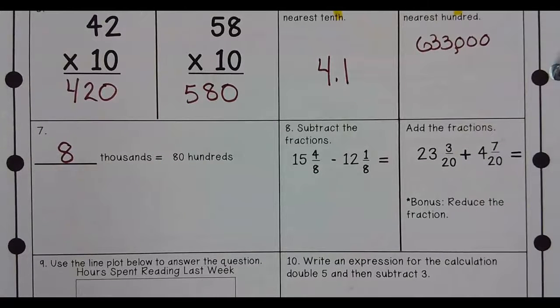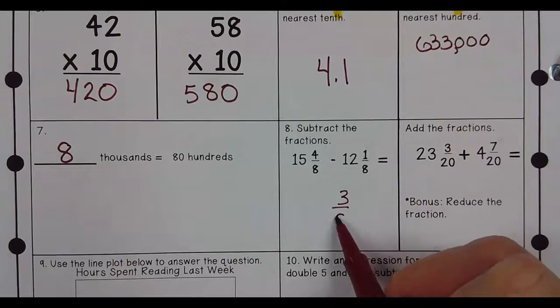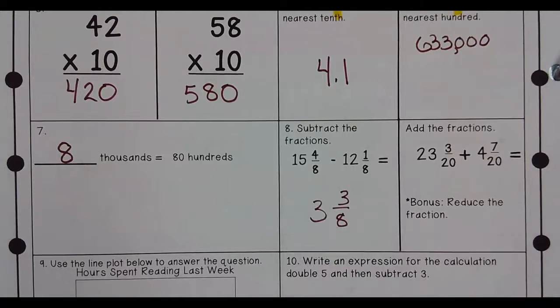Subtract the fractions. 4 minus 1 is 3. So it's 3 eighths. 15 minus 12 is 3. So it would be 3 and 3 eighths.